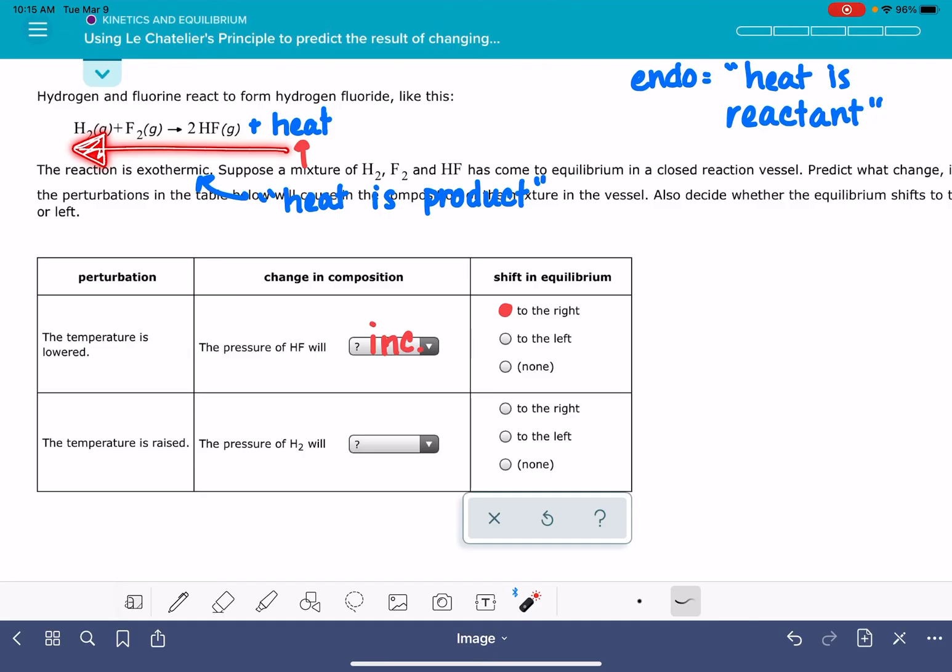So if the position of equilibrium shifts away, in this case that means it's shifting from the right to the left, shifting to the left. And if we shift to the left, we're going to be increasing the amount of everything on the left side and decreasing the amount of everything on the right side.